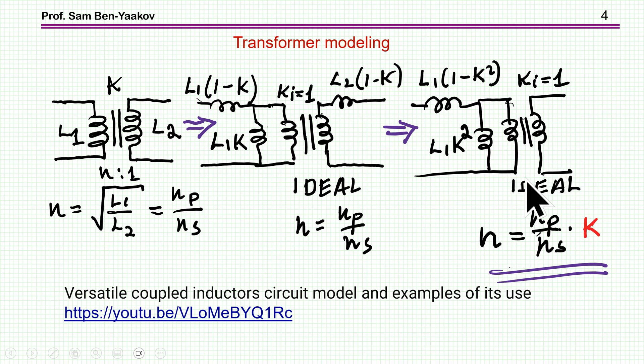Now the turns ratio of this ideal transformer, which with a k equal to 1 of the ideal transformer, this turns ratio should be the number of turns of the primary divided by the number of turns of the secondary times k. So this is the turns ratio that you need for this model, and this is again explained in this video.